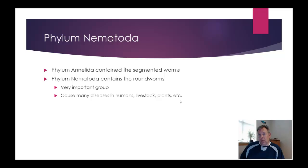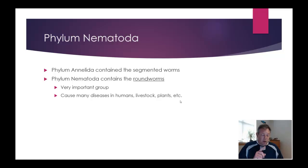The Annelida had the segmented worms. These are smooth worms, which we call the round worms. This is a really important group, especially if you're in human medicine or veterinary medicine. The round worms are important because they cause many diseases in humans and livestock, but they're also important as far as causing disease in plants.